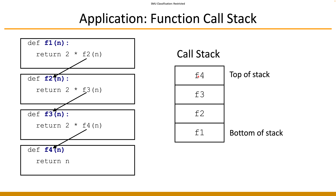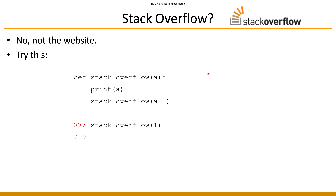When you return from a function, you return from the top. This gives you the last-in, first-out principle: the last function you called will finish first and leave the call stack first. A very common mistake is what we call stack overflow, which happens when you keep making recursive calls without a proper base case. We all know that the base case is how we terminate a recursion sequence — without it, the recursion can run forever.